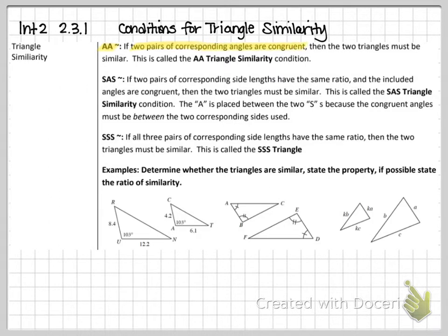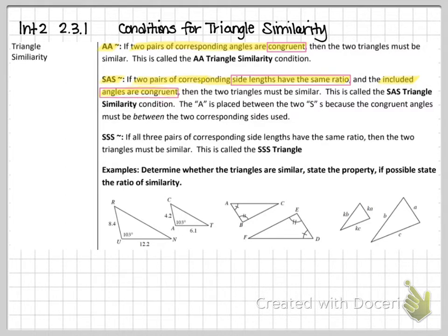With side-angle-side — and yes, it must be that order — two pairs of corresponding side lengths have the same ratio, and it's important to note that the included angles are congruent. Then for side-side-side, as opposed to the five options for congruence, we only have three options for similarity. Side-side-side requires three pairs of corresponding side lengths to have the same ratio.